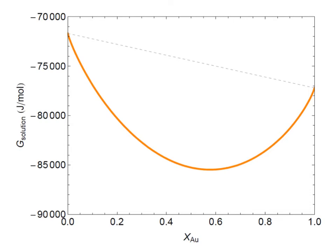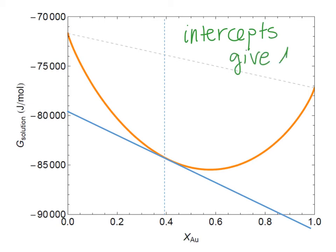So this is a plot of G solution, and this is also for the same silver gold alloy. And so if we draw the tangent to the curve at some point on this plot, then we can find the intercepts, which will just give us mu. So in this case, the intercepts give mu of X.